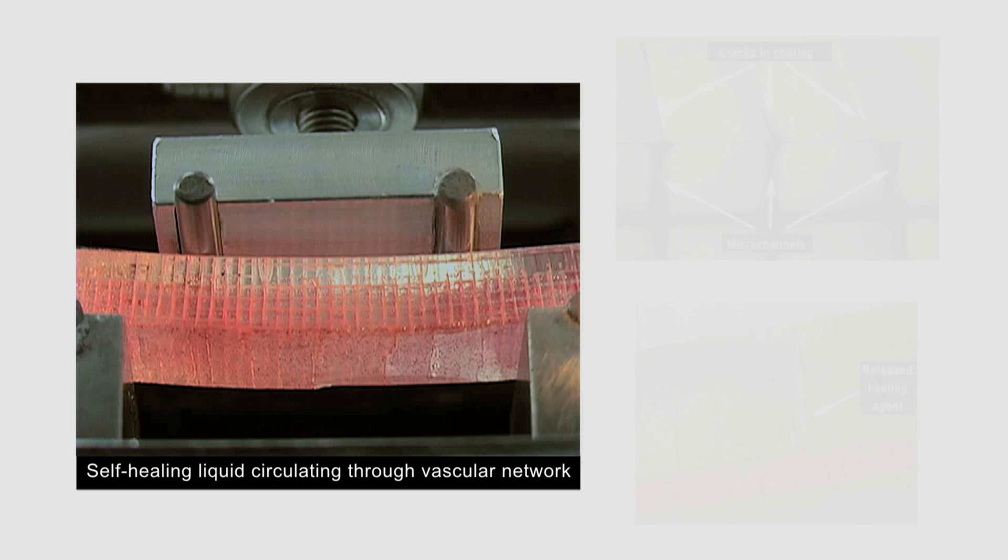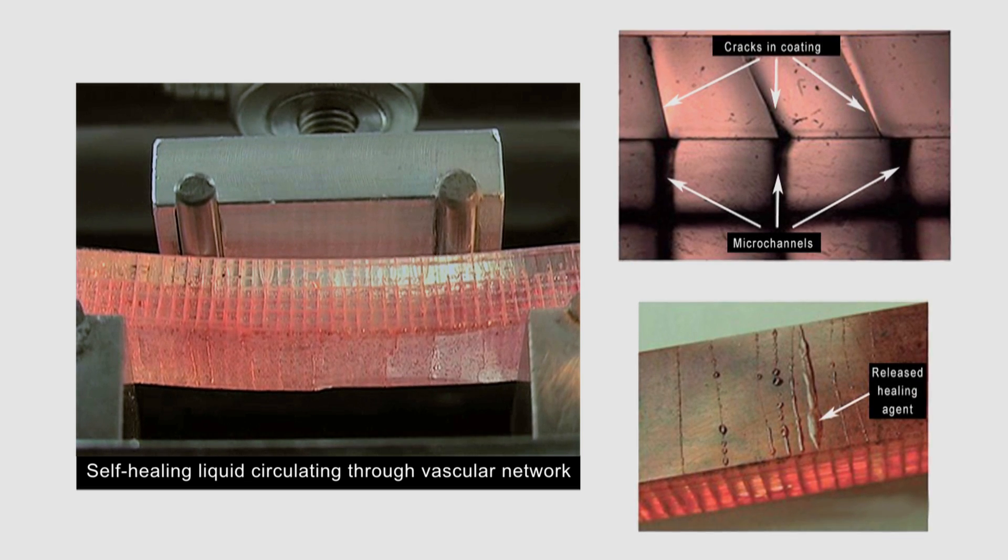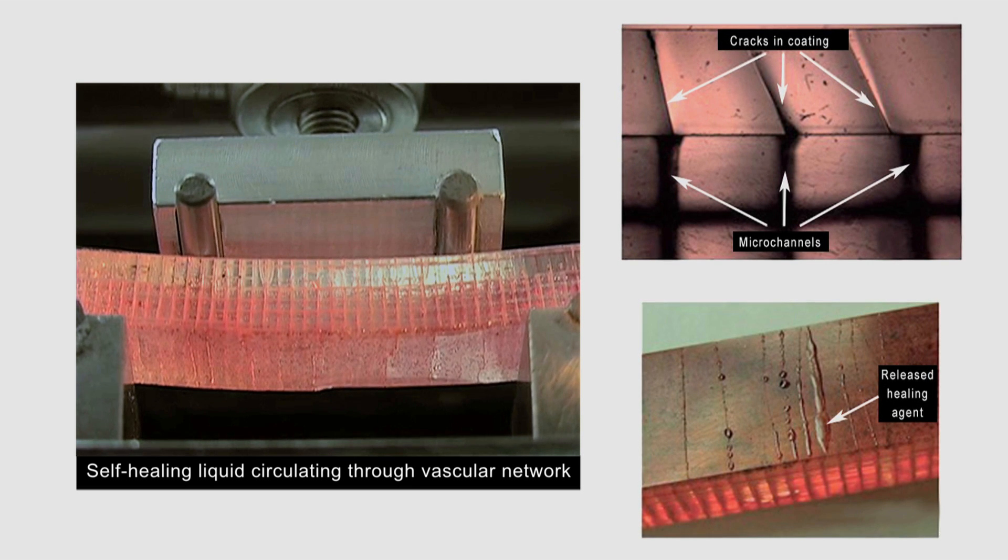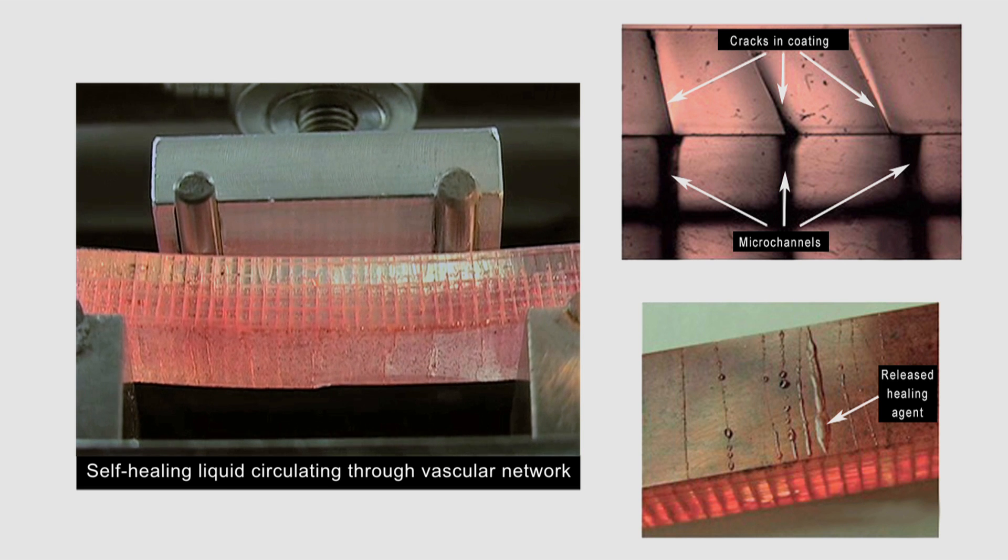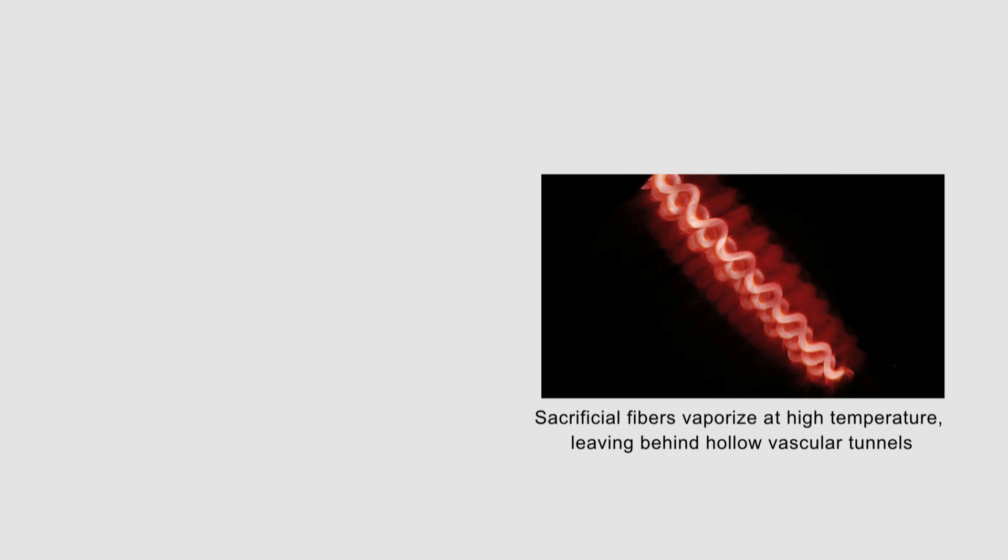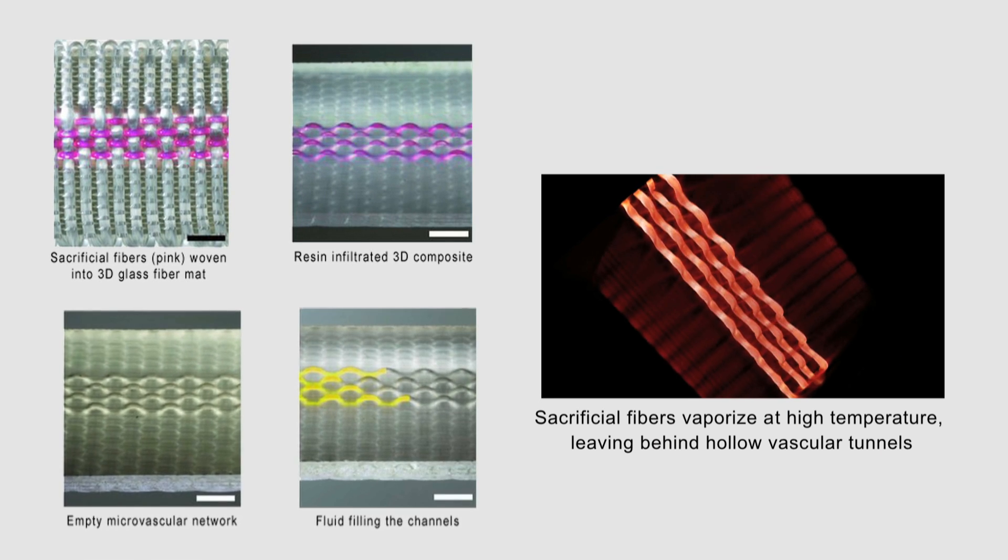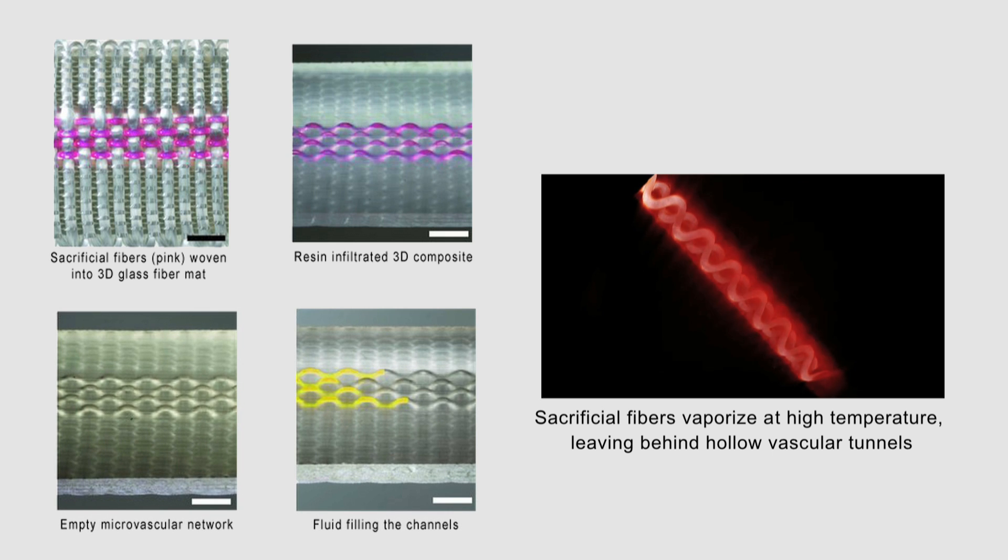So our initial foray into microvascular systems was for repeated healing, long-term healing of those systems by circulating healing agents. In 2007 we demonstrated that the vascular system has the ability to continuously heal, but we didn't really have a very practical means of manufacturing it. Now that we have the sacrificial fiber manufacturing approach, we have the ability to make a vascular system so much easier.